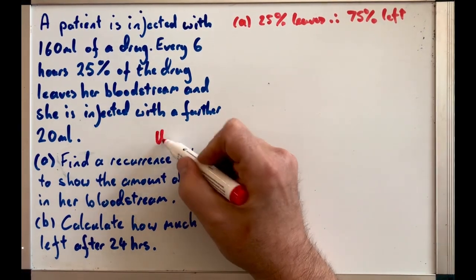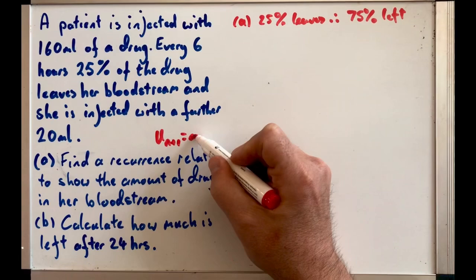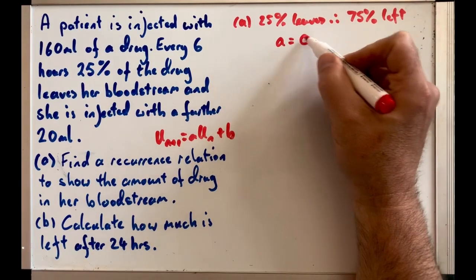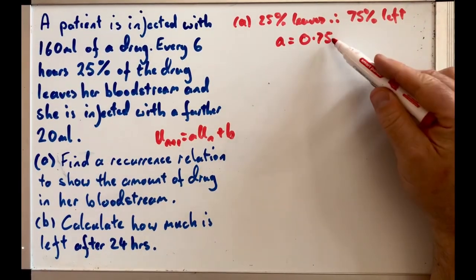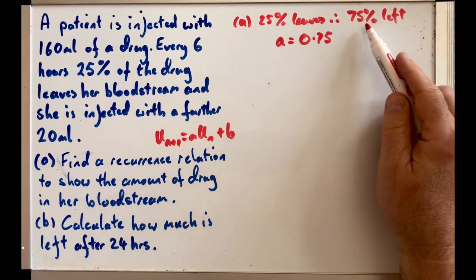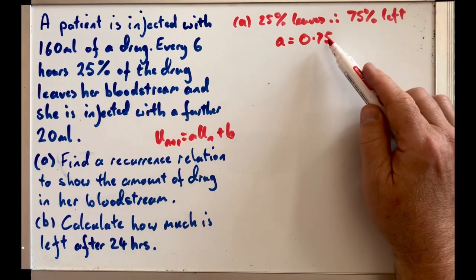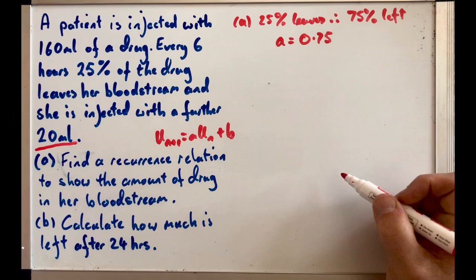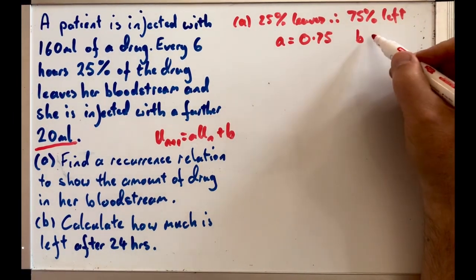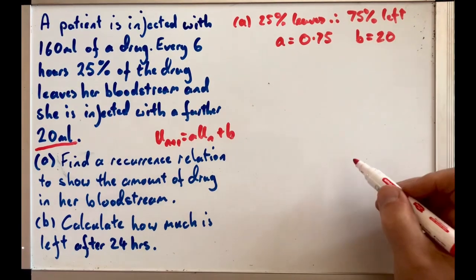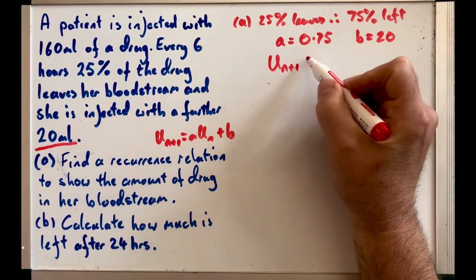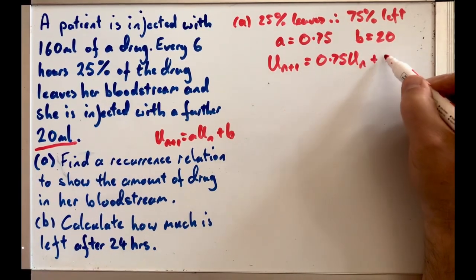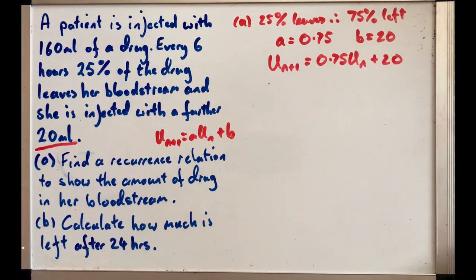So we now know that our multiplier, remember a recurrence relationship is of the form Uₙ₊₁ equals aUₙ plus b. We now know our multiplier which is the a will be 0.75, which is just 75% as a decimal because 25% leaves so 75% left which is 0.75. Now b is what we're adding in every time, but look we're adding in 20 milliliters, so we can just say b is equal to 20. So our recurrence relation is Uₙ₊₁ equals 0.75Uₙ plus 20 and that's A done.